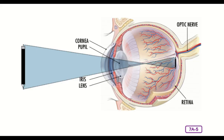The brain recreates the image so that the house is now seen right-side up. As the eyes work together with the nervous system, this whole process takes less than one second to complete. When you think of the factors and parts of the eye that are involved in allowing us to see, it is indeed wondrous to think that it takes less than one second to see.